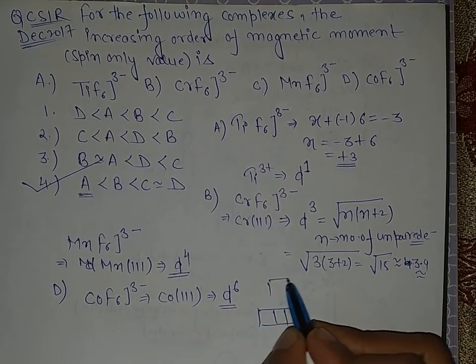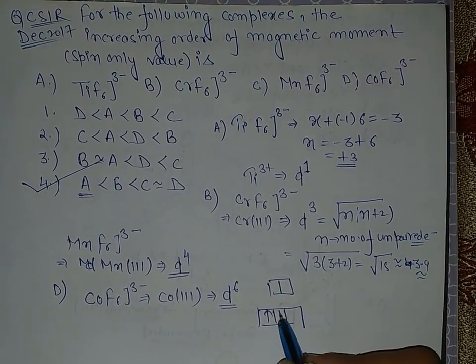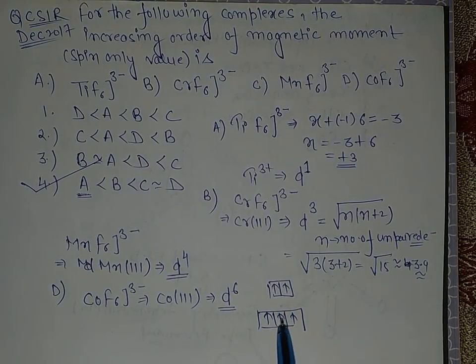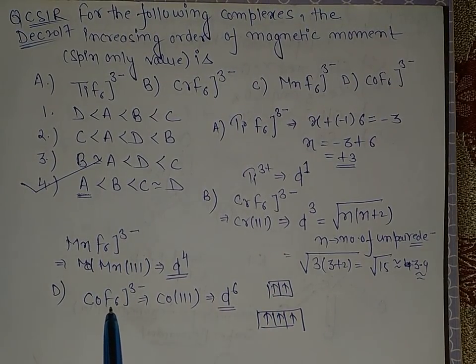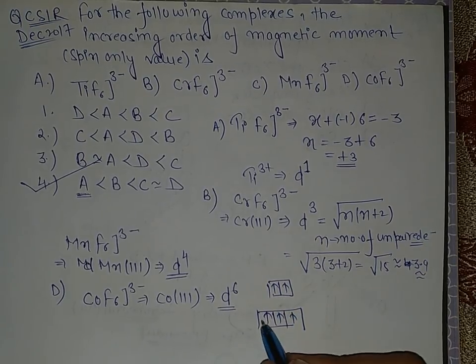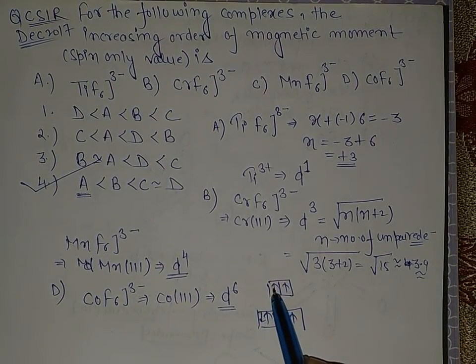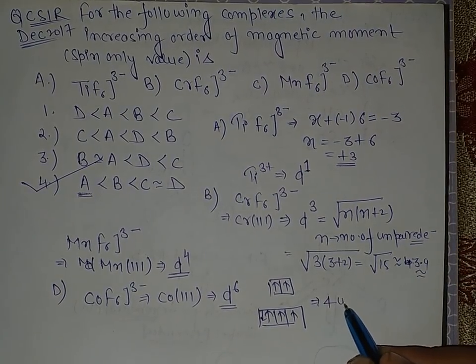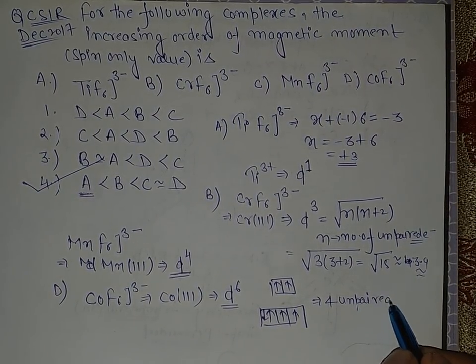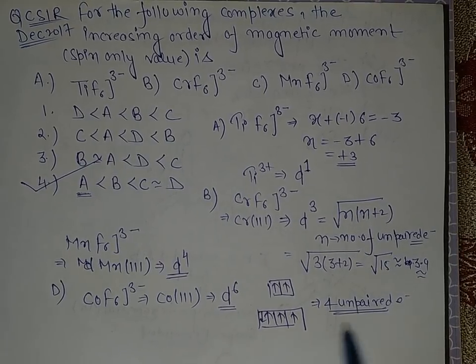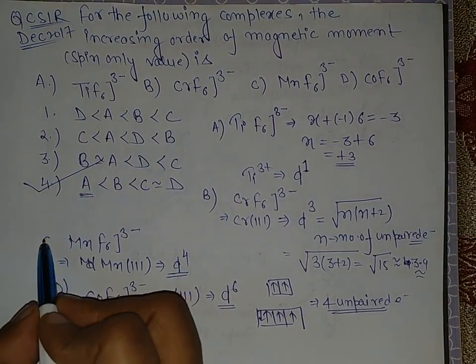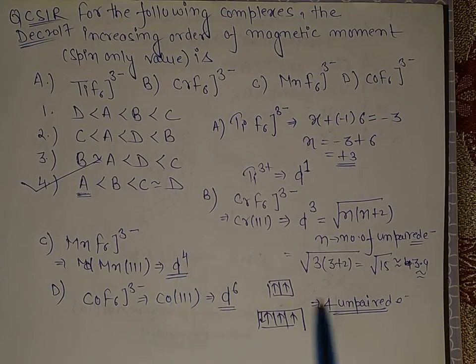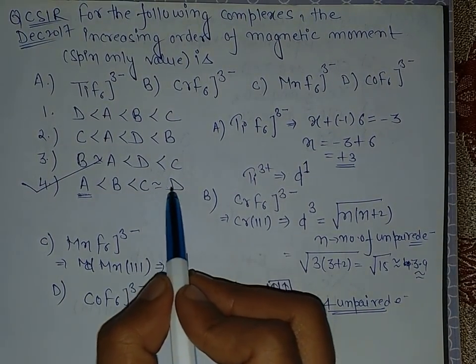But now one electron will be paired. This is T2g and this is eg. I'm filling in this order because this is a high spin complex: one, two, three, four, five, and six. How many unpaired? One, two, three, four. That implies four unpaired electrons are there. So in option C we have four unpaired electrons, and in D also we have four, so C equals D.